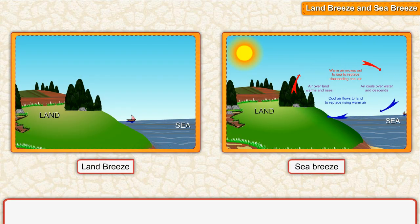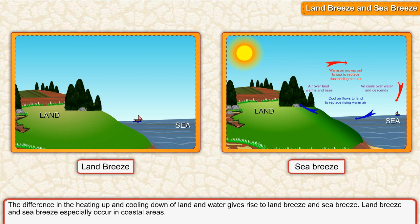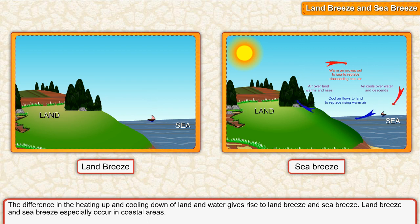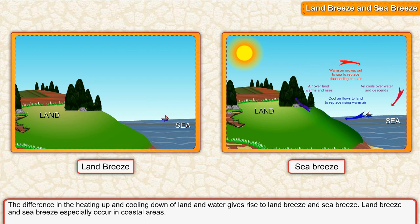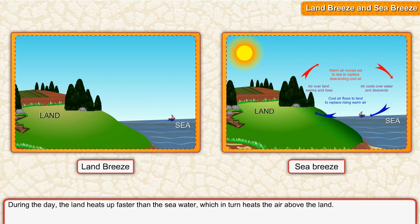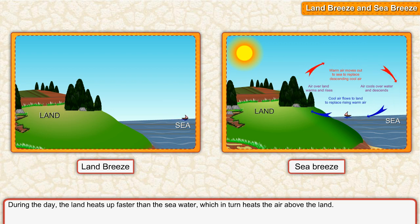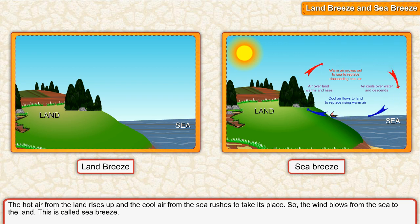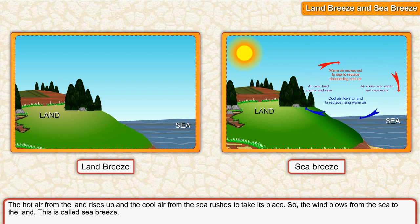Land Breeze and Sea Breeze. The difference in the heating up and cooling down of land and water gives rise to land breeze and sea breeze. These especially occur in coastal areas. During the day, the land heats up faster than the seawater, which in turn heats the air above the land. The hot air from the land rises up and the cool air from the sea rushes to take its place, so the wind blows from the sea to the land. This is called sea breeze.